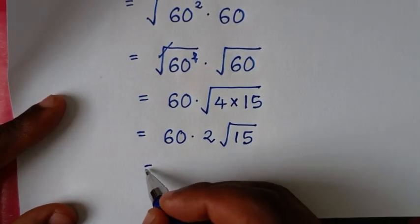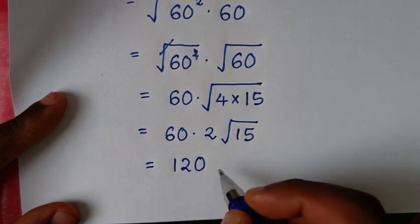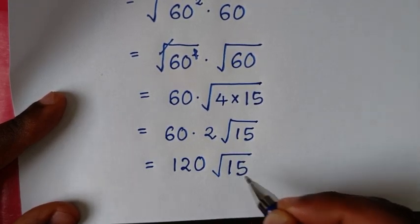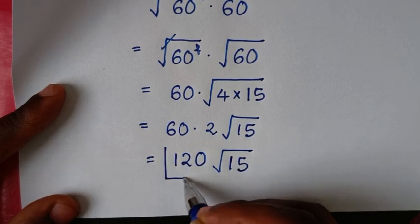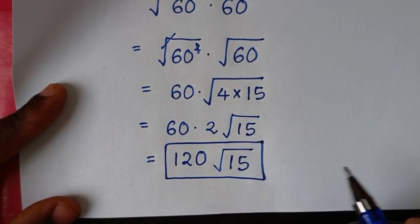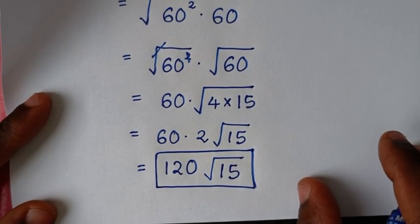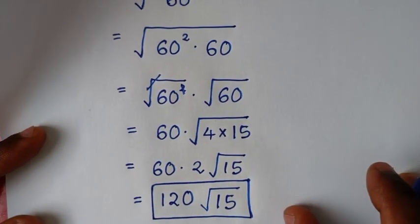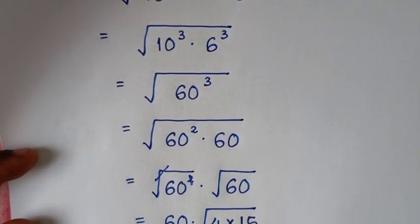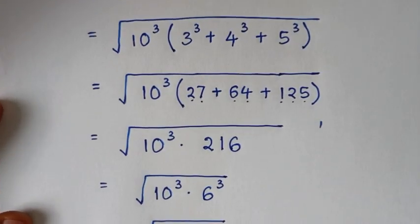Then it will be equal to 60 times 2 times the square root of 15, which is 120 times the square root of 15. So this is our final answer: 120√15. Thank you for watching, don't forget to subscribe to my channel, and see you in the next video. Bye bye.